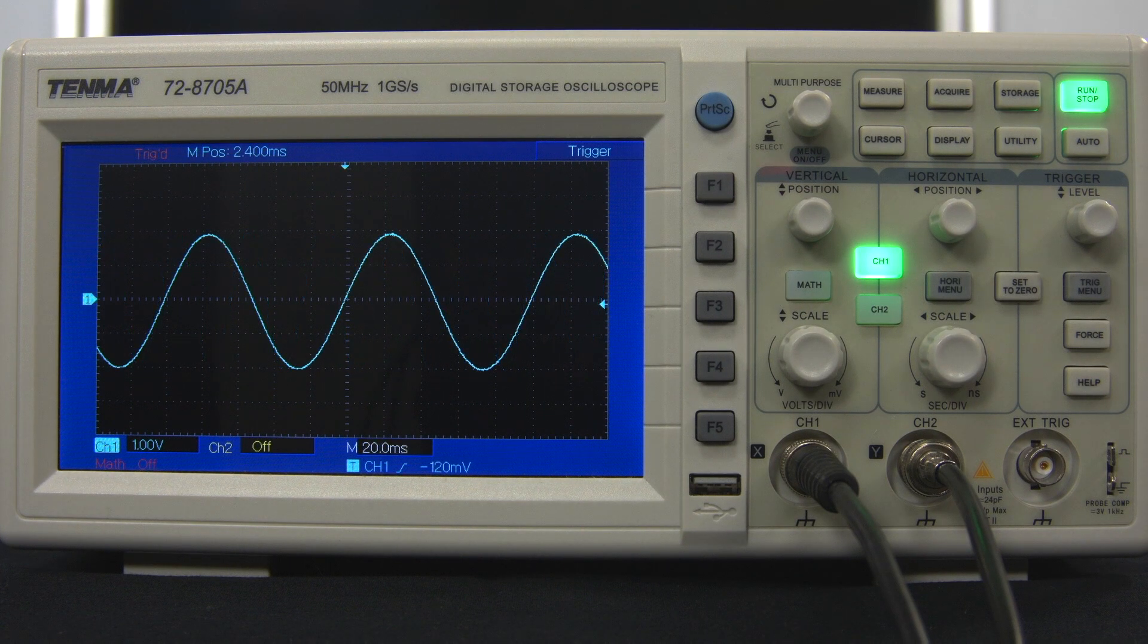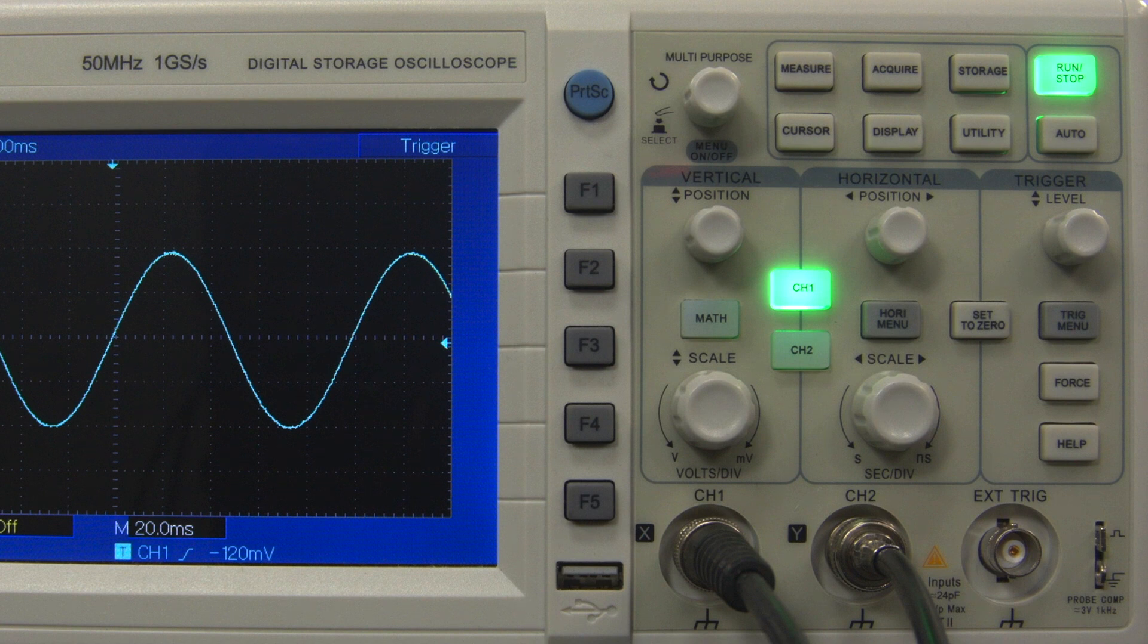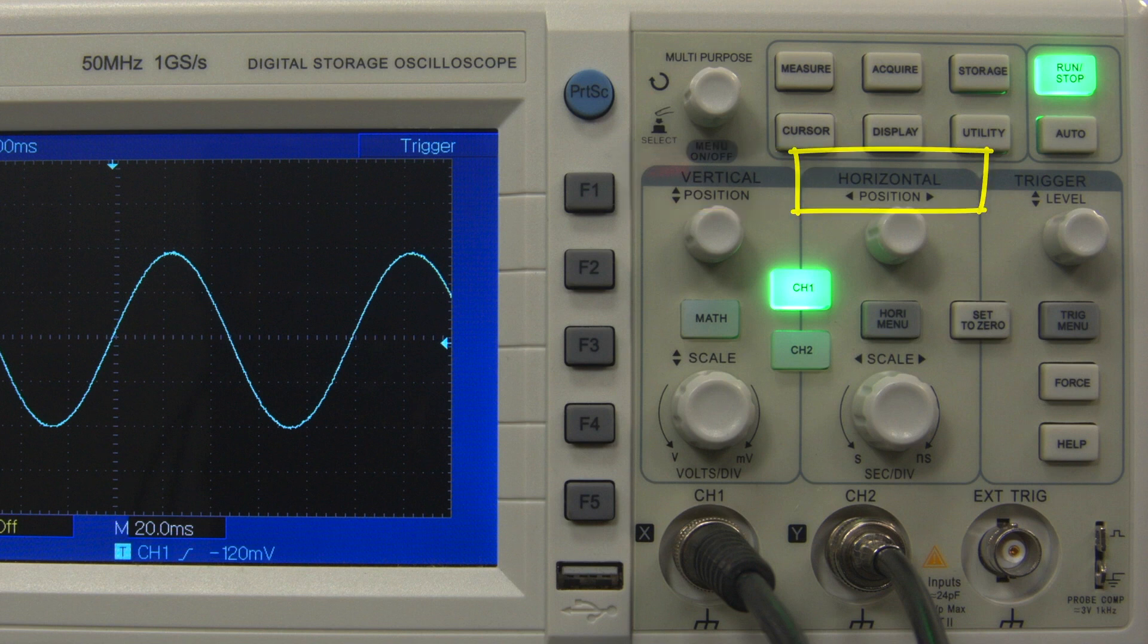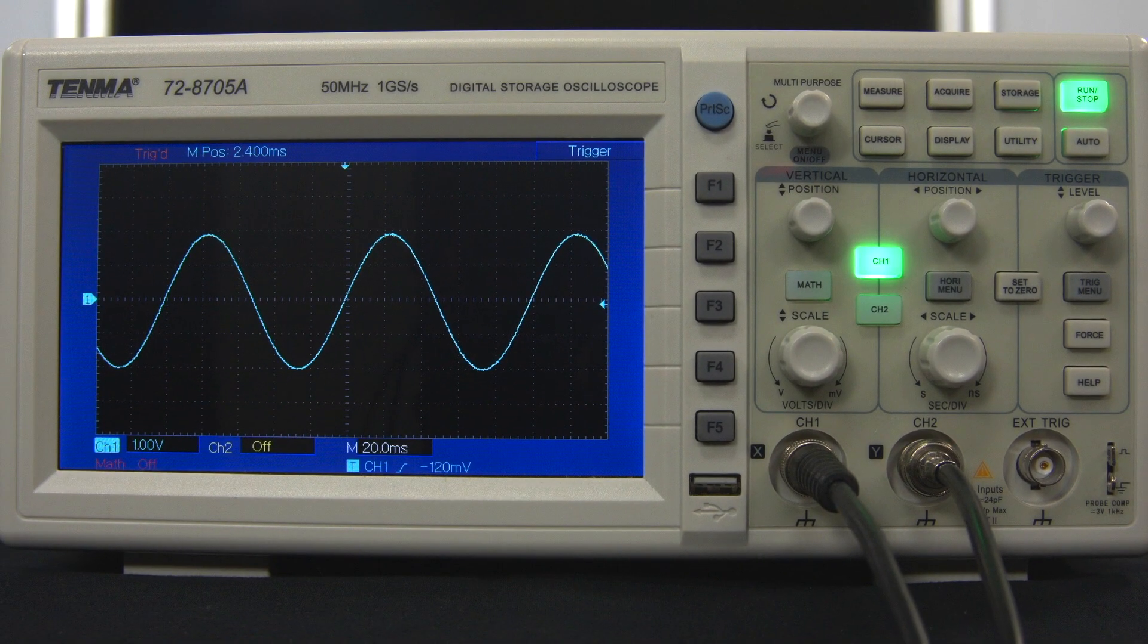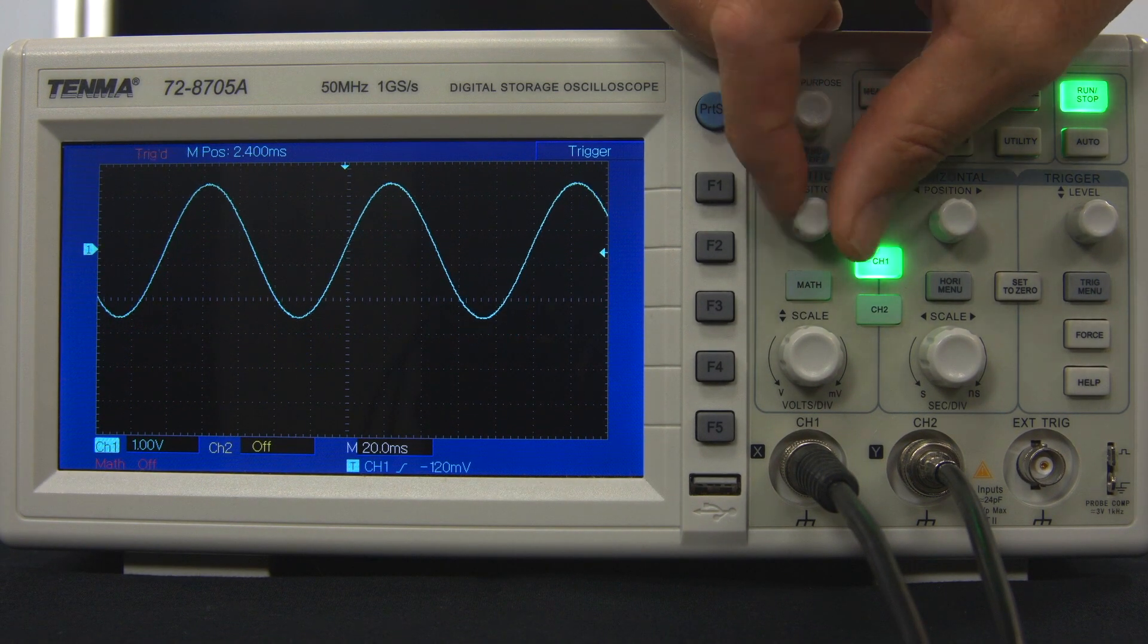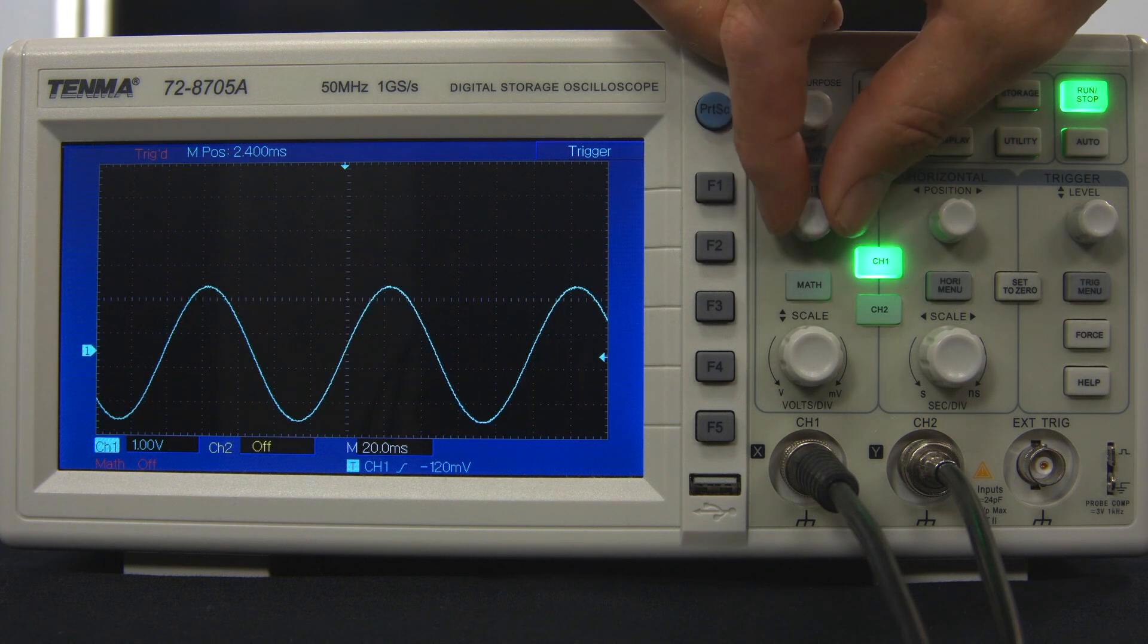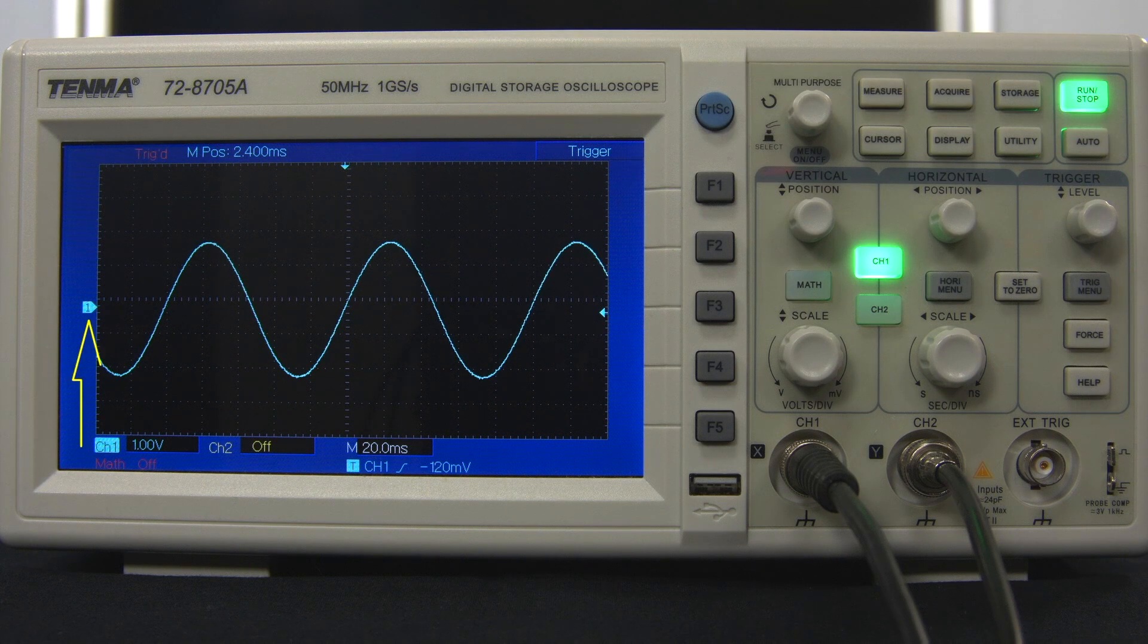Now let's look at the controls on the right hand side of the oscilloscope. The main controls are arranged in three groups labelled at the top: vertical, horizontal and trigger. Starting with the vertical controls, the position knob moves the signal up or down on the screen. The location of the zero voltage is always indicated on the screen by the arrow on the left.